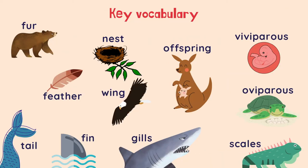Before we start, let's have a look at some key vocabulary. Fur is the skin, the hair of the animals. This is a feather of a bird. Here we can see a tail — in this case the tail of a whale, but there are plenty of animals with a tail. Fin is this part of the fish, and also fish have gills, which are these little holes near the head that they use to breathe.